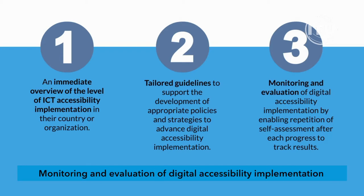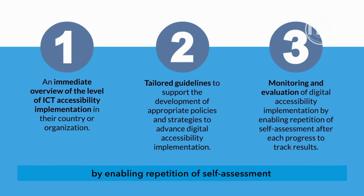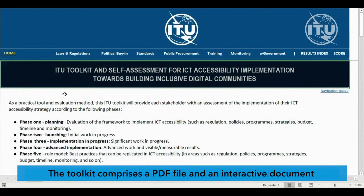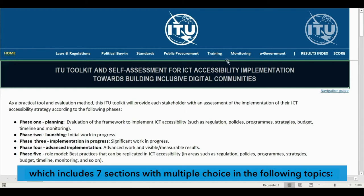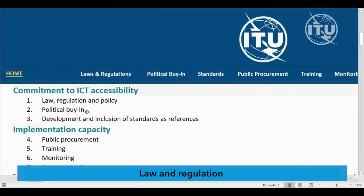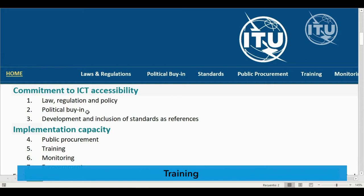The toolkit also enables monitoring and evaluation of digital accessibility implementation by enabling repetition of the self-assessment after each progress to track results. The toolkit comprises a PDF file and an interactive document to complete the self-assessment questionnaire, which includes seven sections with multiple choice questions covering: Law and Regulation, Political Buy-in, Standards as References, Public Procurement, Training, Monitoring, and E-Government.